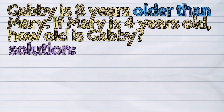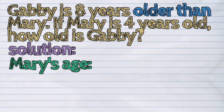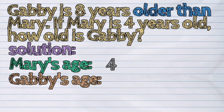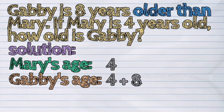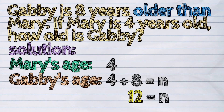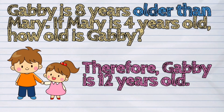Here is the solution. Mary's age is 4. Gabby's age is 4 plus 8. 4 plus 8 is equal to 12. Therefore, Gabby is 12 years old.